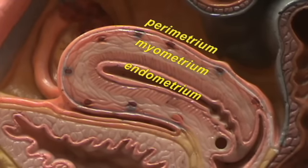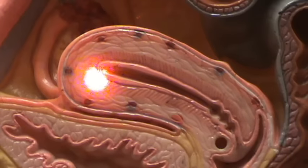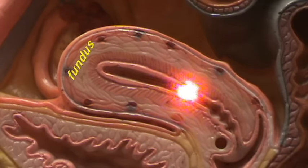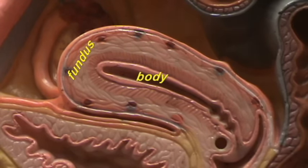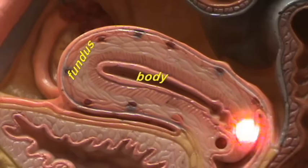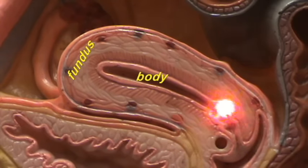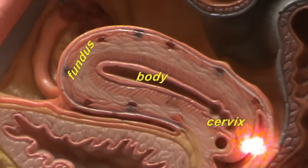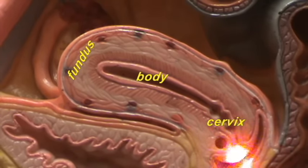You can divide the uterus based on its shape. This dome-shaped part of the uterus is referred to as the fundus. Most of the rest of the uterus is simply referred to as the body of the uterus. And then right over here there is a cylindrical part. This is referred to as the cervix, and you can see the tip of the cervix extending into the vagina.